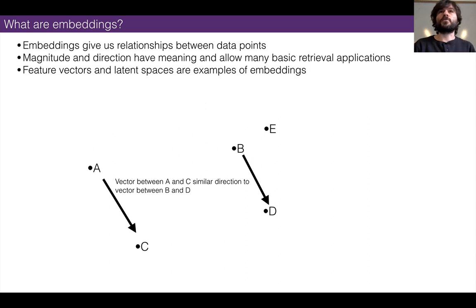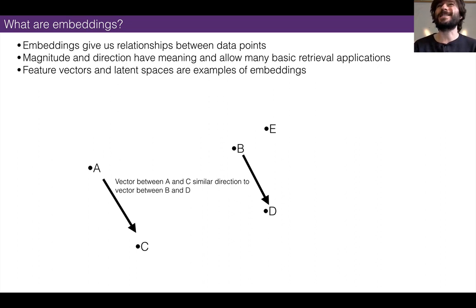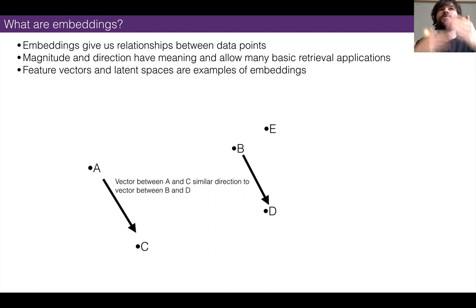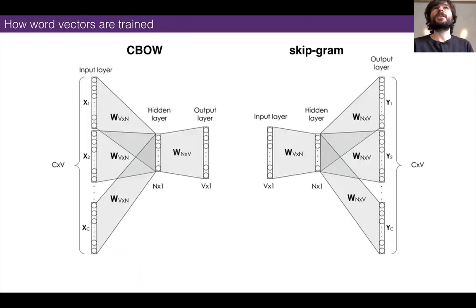Let's remember what embedding means. When we extract features from images we embed them in a latent space where each dimension corresponds to meaningful high-level feature modulations. The geometry of that space is important: data points that are contextually similar appear near each other, and the vectors between points often denote some feature transformation — like the 'add glasses' or 'add blonde hair' vectors in GANs. We've seen this a lot with images, and we can do the same for text.